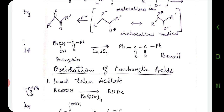Benzoin is oxidized to benzil by copper sulfate in pyridine. At 95 degrees centigrade, an 86% yield of benzil is obtained.